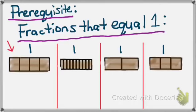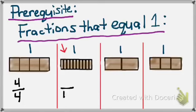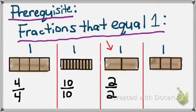A reminder of our prerequisite: fractions that are equal to 1. In the first picture, the whole Hershey bar is broken into 4 pieces. We have all 4 of them, so we have 4 fourths, and 4 fourths is equal to 1. In the next picture, the bar is broken into 10 pieces — 10 tenths equals 1. Third picture, 2 halves equals 1. Fourth picture, 3 thirds equals 1. So any number over itself equals 1.